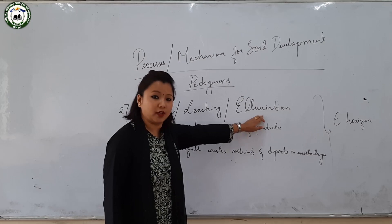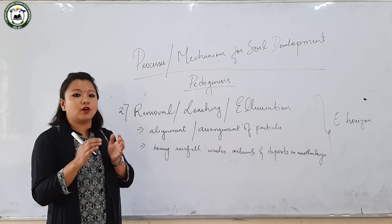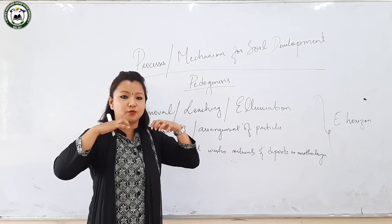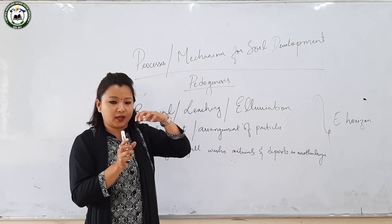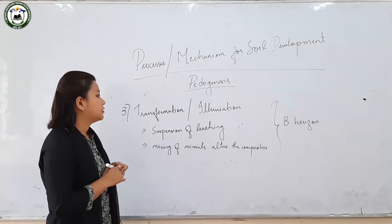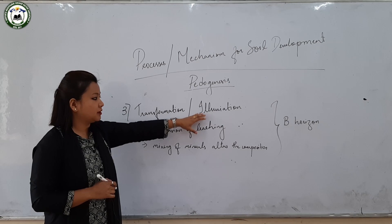The second process is removal, leaching, and eluviation. The humus and minerals added to the top layers get washed away. This happens because of the arrangement of soil particles — if the soil particles are loosely spaced, with greater space between them, heavy downpour causes the minerals to be washed away. These minerals then accumulate in another layer, and this is majorly profound in the E horizon.